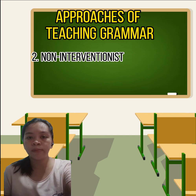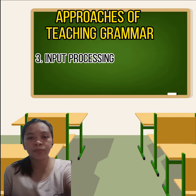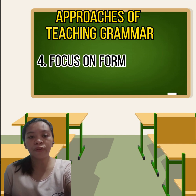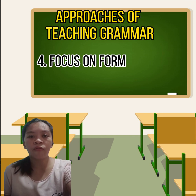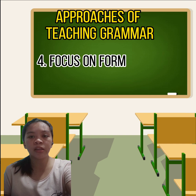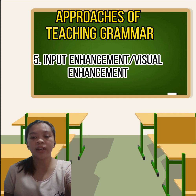Number three is input processing. It is where learners are guided to pay attention to target language input that is likely to cause a problem. Number four is focus on form, which is systematic in not interfering — focus on form produces a faster way of learning and a higher probability of second language attainment.